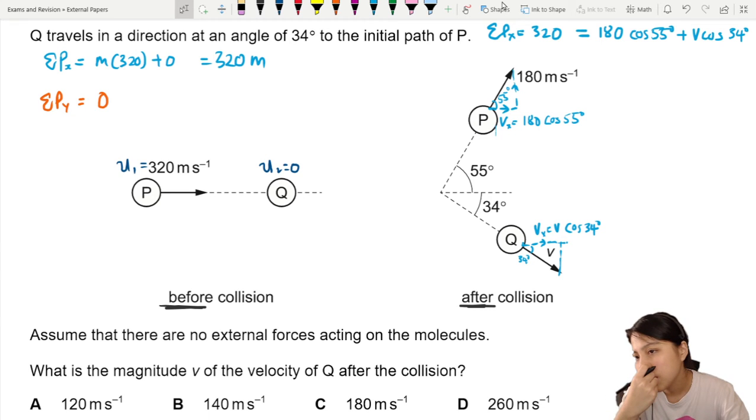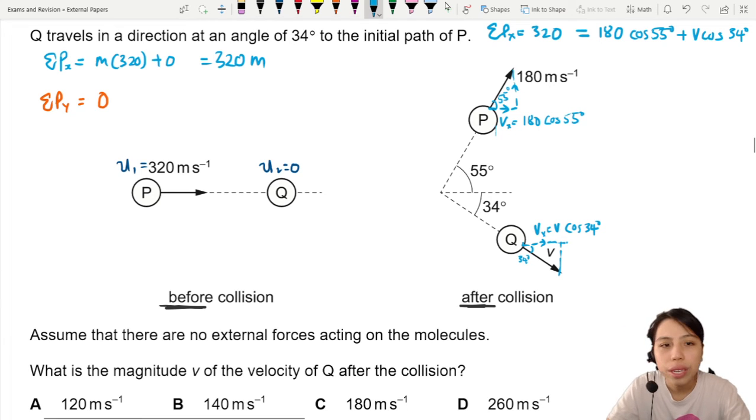Can we solve anything? Not yet. We have two unknowns. 320M. We don't know M. We don't know V. Never mind. We continue.